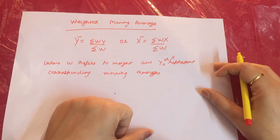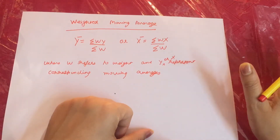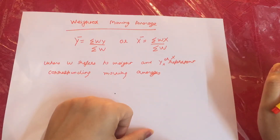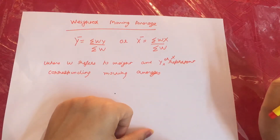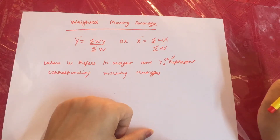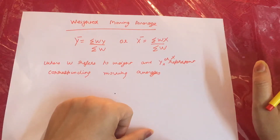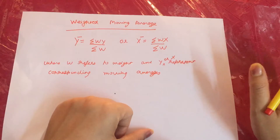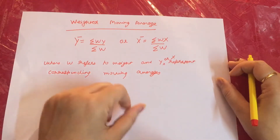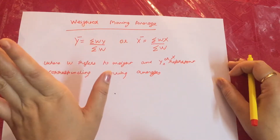Students, I have discussed this before in my previous lectures. I have discussed simple moving averages in which I discussed 4 methods: 3-yearly moving average, 5-yearly moving average, 7-yearly moving average, and even numbers — 4-yearly moving average. Today's lecture is on weighted moving average.